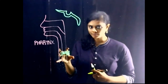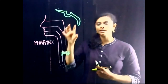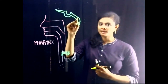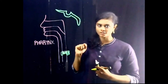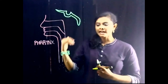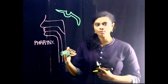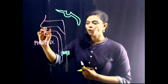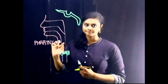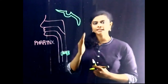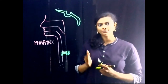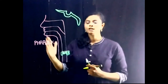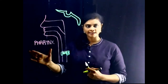Inferiorly the Pharynx is bounded by these three components, and superiorly by the base of the skull — that is the posterior part of the body of the sphenoid and the base of the occiput. Anteriorly, as we know, it is the nasal cavity, oral cavity and larynx. Posteriorly, the Pharynx freely glides on the prevertebral fascia.